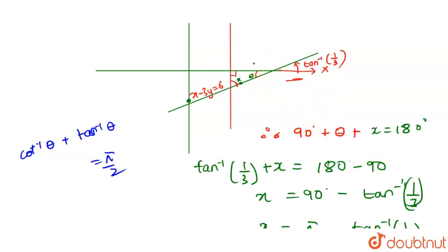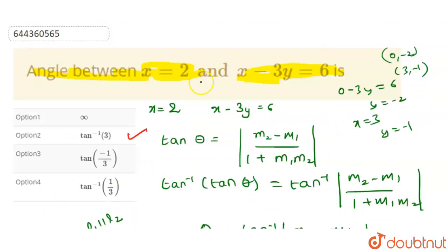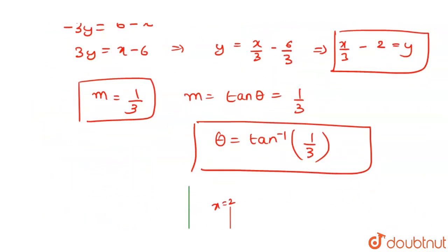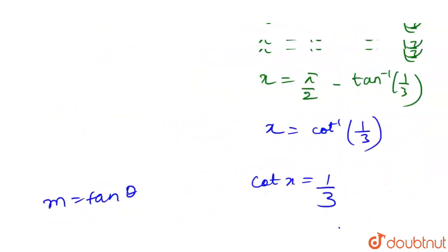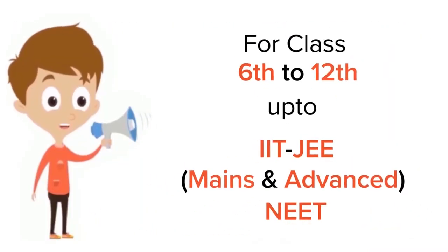The angle will be made with the x-axis, and from that we find the angle between the given lines. If this point is not maintained, the answer will not be correct. One may be confused when trying to find the angle directly between two lines. Since we don't have the slope of the first line (x = 2), we cannot use the standard formula — it becomes invalid. Our final answer is tan⁻¹(3).